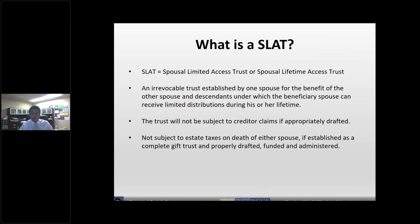Now with all that housekeeping behind us, let's get down to brass tacks. A SLAT means either a Spousal Limited Access Trust or a Spousal Lifetime Access Trust—they generally mean the same thing. Put very plainly, it's an irrevocable trust created by one spouse for the benefit of another spouse and potentially descendants or other beneficiaries, where the beneficiary spouse can receive distributions during his or her lifetime based upon a limited distribution standard.